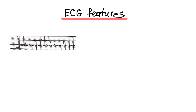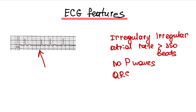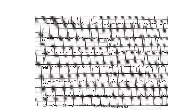ECG features of atrial fibrillation: Rhythm is irregularly irregular. Atrial rate is greater than 350 beats per minute, and the atrial rate is higher than ventricular rate. We don't see any P waves, and the QRS complex is narrow. Here you can see an ECG with atrial fibrillation — the two most important features are irregularly irregular rhythm and no P waves.